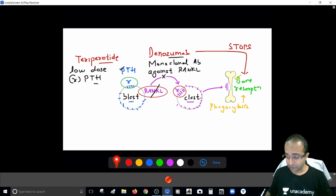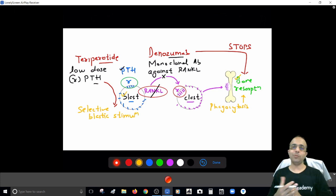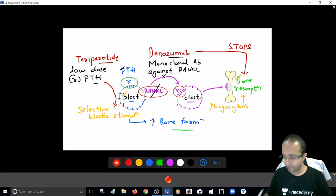When you give parathyroid hormone in such a low dose, the profound effect you see is selective osteoblastic stimulation. So this is something that only and only stimulates the osteoblasts. I hope now you get it. If only osteoblast is stimulated, you will selectively have increase in the bone formation. Bone formation goes up. So again, that makes sense. Osteoporosis is going to benefit.